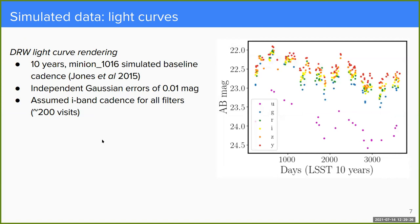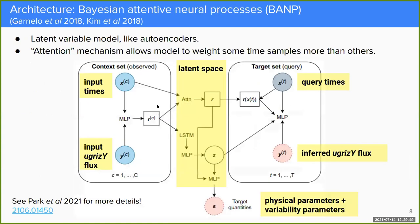I simulated 10-year LSST light curves using the DRW model with the early baseline cadence, minion 1016, and rendered Gaussian errors of 0.01 mags. For simplicity, I assumed I-band cadence for all filters. The base ML architecture I use for joint light curve reconstruction and parameter inference is called an attentive neural process. I modified it to return the full posterior PDF over the light curve and target parameters — so I call it a Bayesian attentive neural process. At its core, it's a latent variable model like autoencoders.